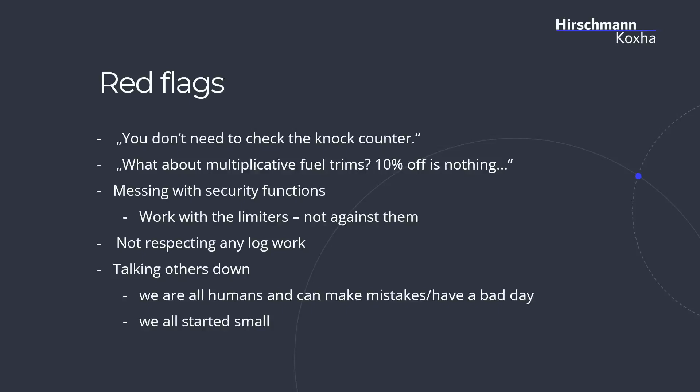Another thing I completely can't understand is messing with security functions. Of course sometimes you need to move certain limiters, for example with fuel cut, but for a Stage 1 it will rarely if ever be needed to adjust any type of limiter. Work with the limiters, not against them. Another thing I can't stand are tuners who do not respect any log files. The car gives us the numbers we need to work with — I cannot deny the data recorded by the sensors. If a car registers knocking, I can't say it's not there. If I register two bars of boost, which is insane for a stock turbo, I can't just say it's not. This is why I always encourage people to make logs.